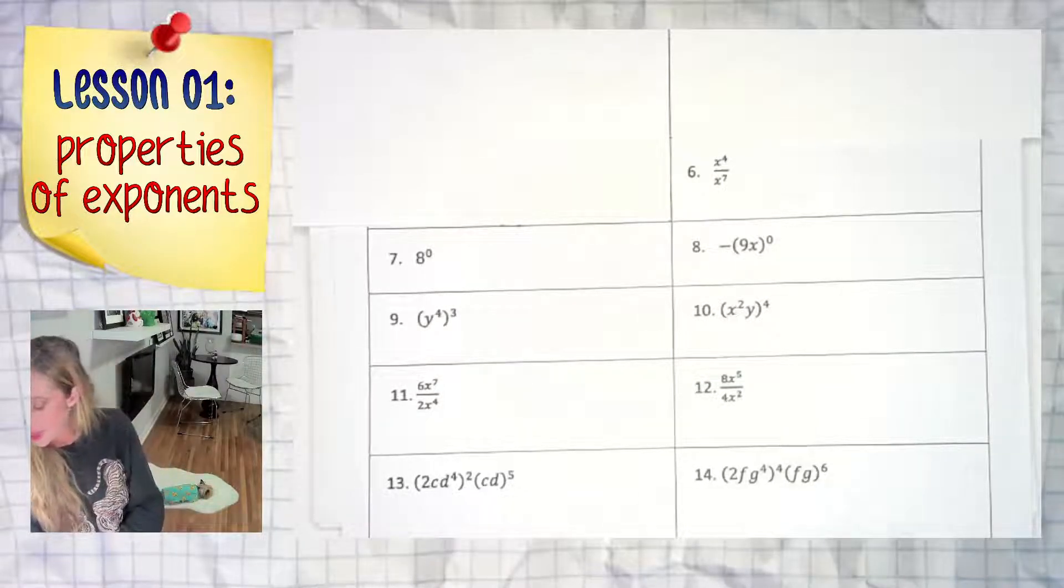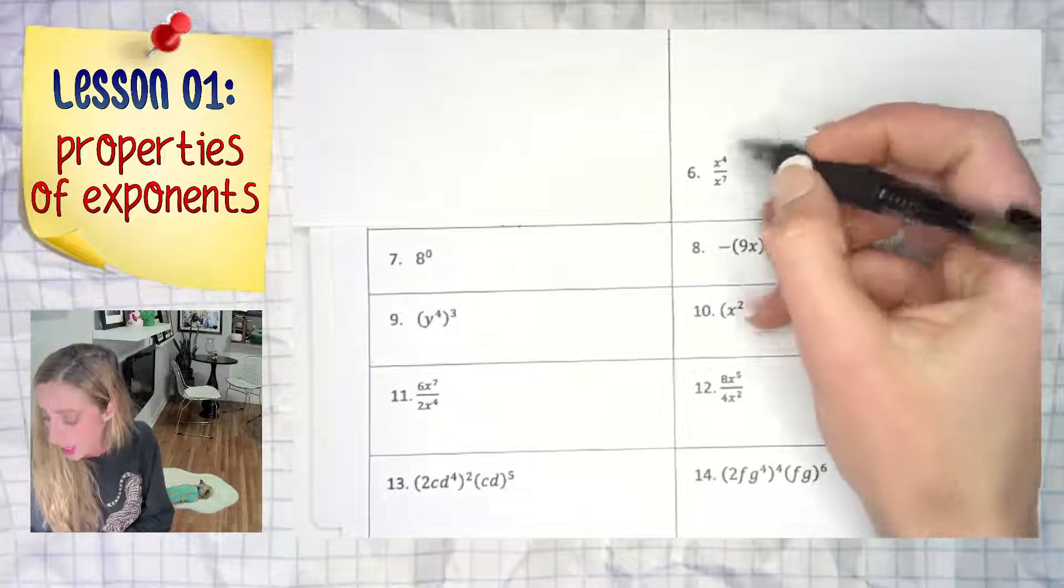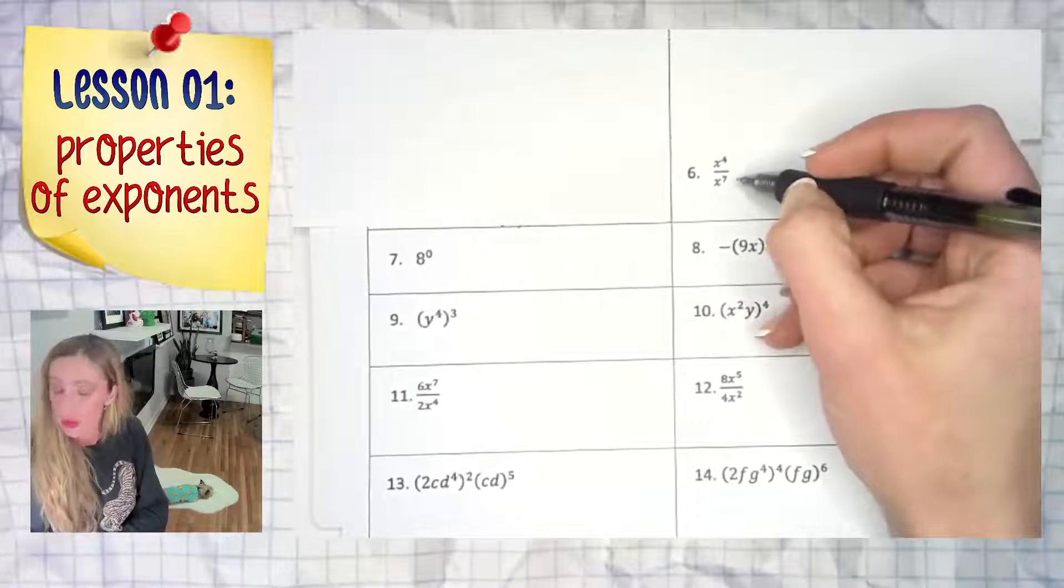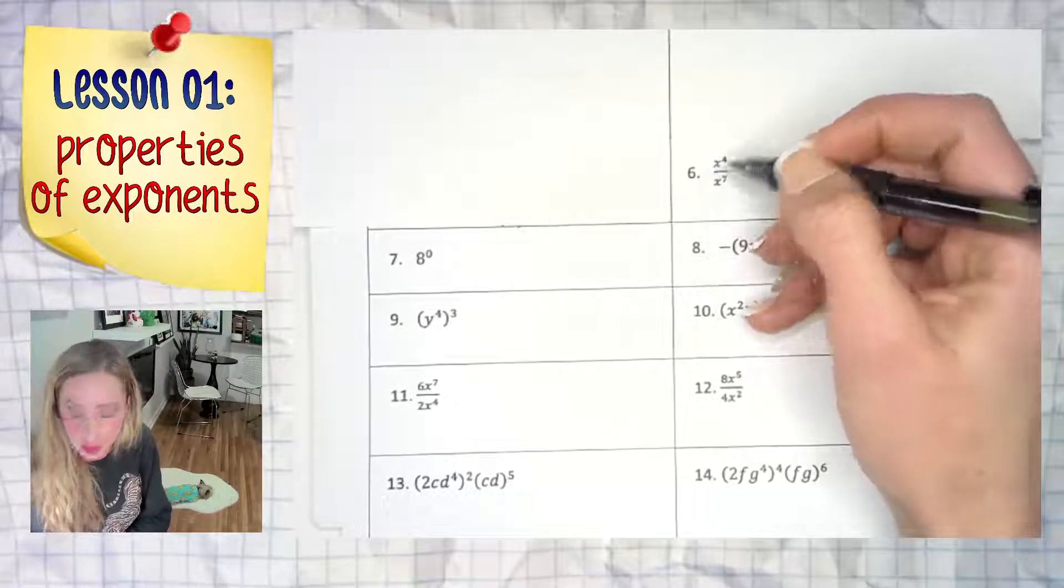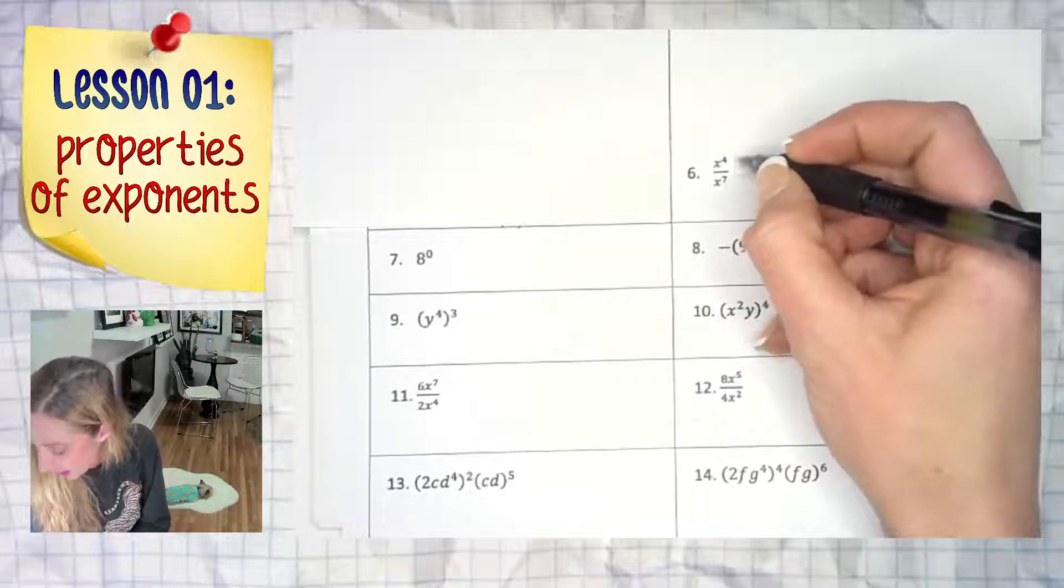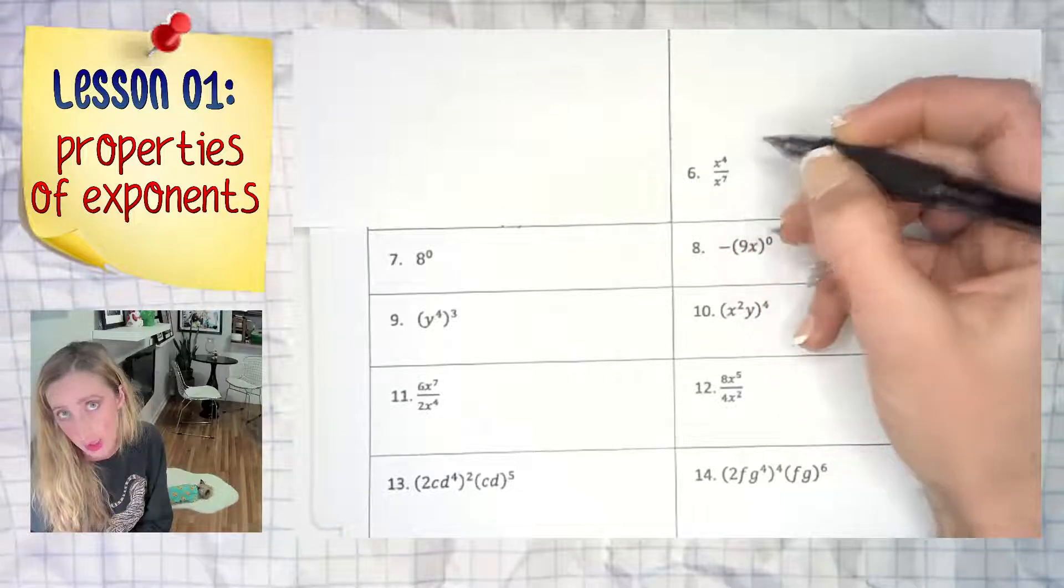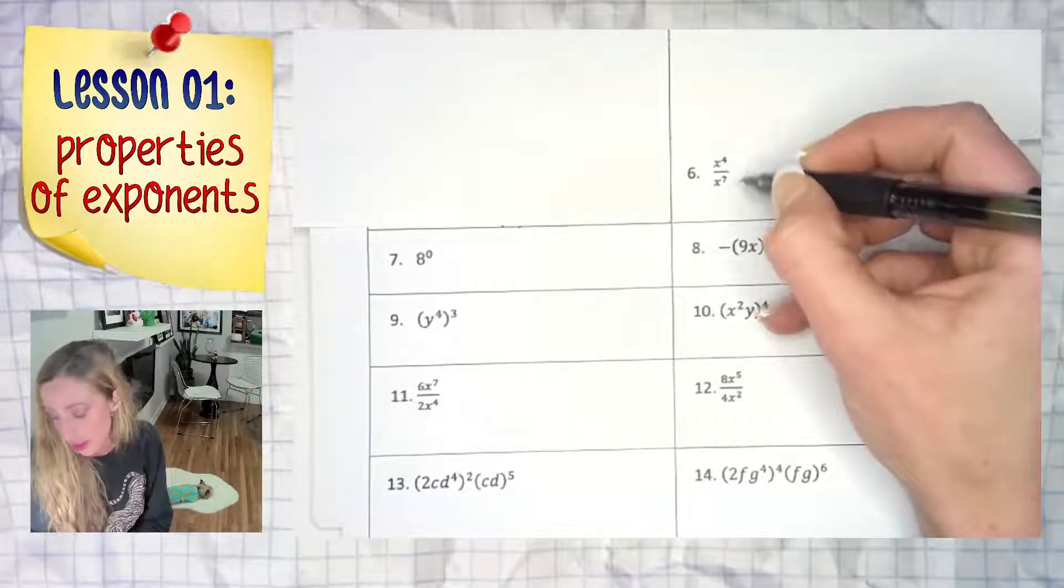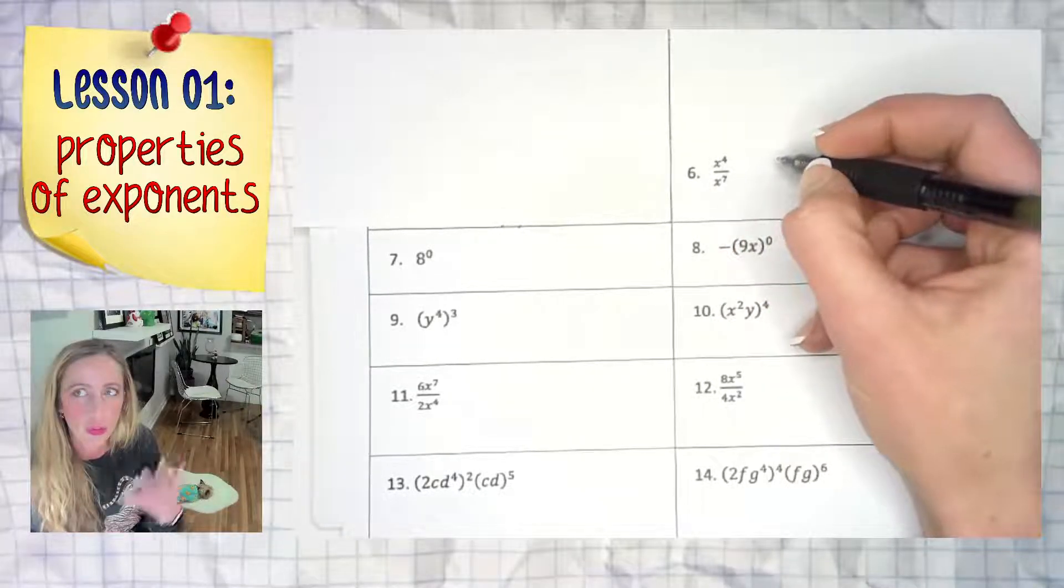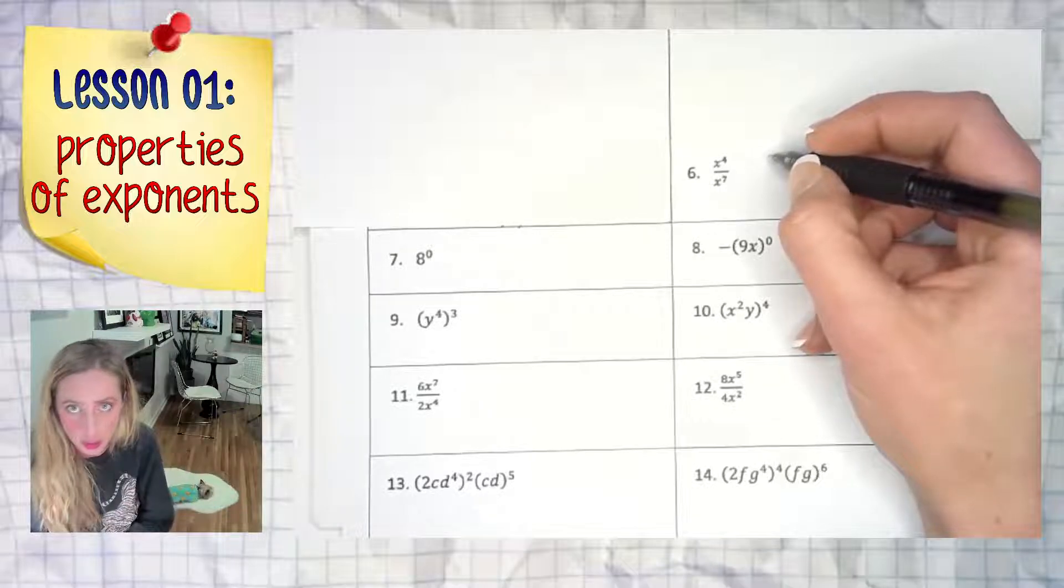Here we are looking at number six. We have a rational expression, a fraction, or a division problem - whatever you'd like to call it. It is x to the fourth power divided by x to the seventh power.